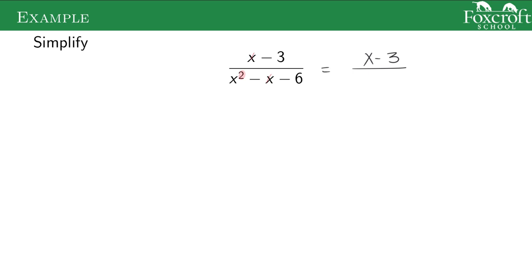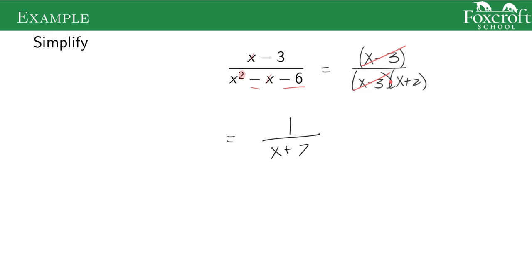If we think about factoring, we're looking for the two numbers that multiply to give this number and add to give this number — that's going to be negative 3 and positive 2. Now on the bottom, I've changed it to multiplication between two different parts: x minus 3 times x plus 2. So now I can take this whole x minus 3 on the top and cancel it out with this whole x minus 3 on the bottom. That gives me 1 on the top — whenever you cancel something out it gets replaced by a 1 — and just x plus 2 on the bottom.